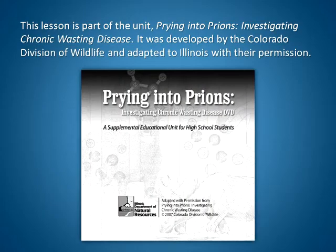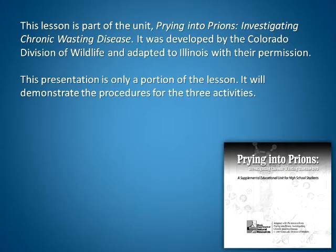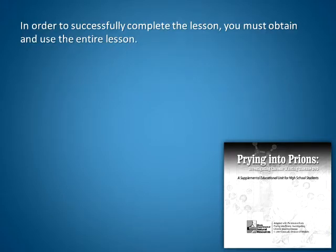This lesson is part of the unit Prying into Prions: Investigating Chronic Wasting Disease. It was developed by the Colorado Division of Wildlife and adapted to Illinois with their permission. This presentation is only a portion of the lesson — it will demonstrate the procedures for the three activities. In order to successfully complete the lesson, you must obtain and use the entire lesson.